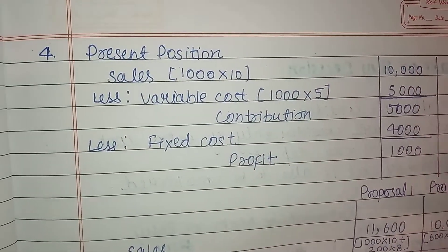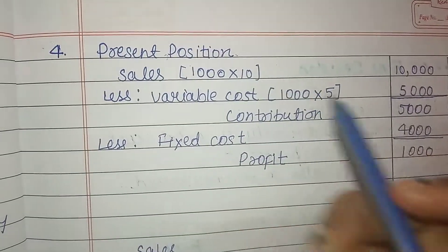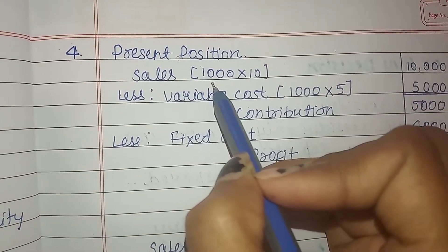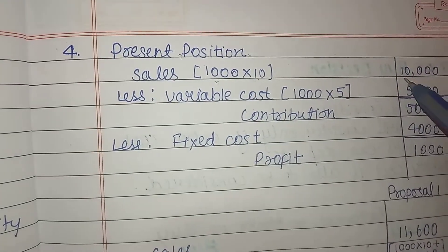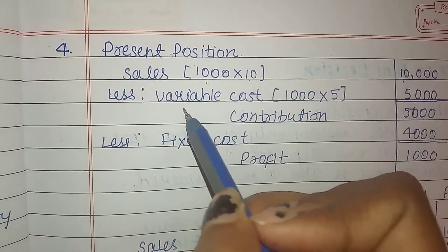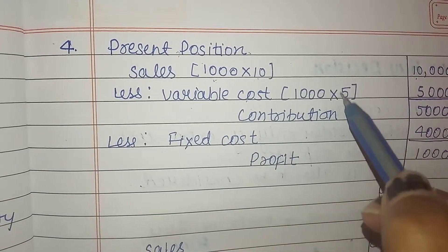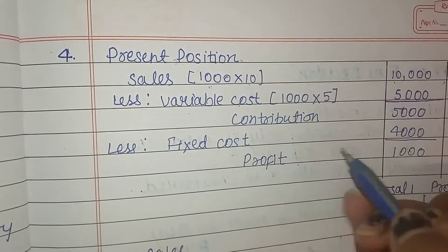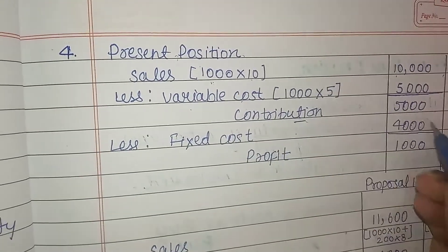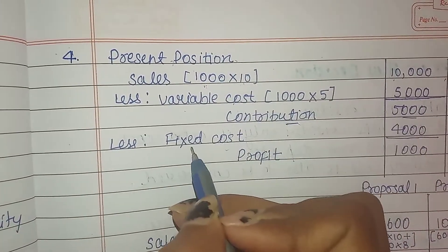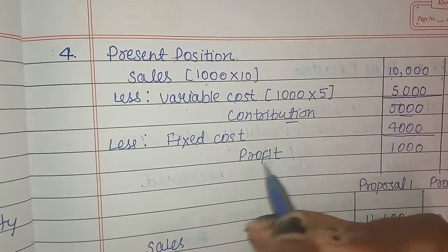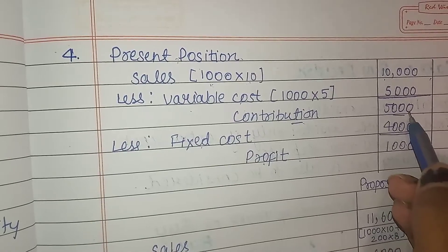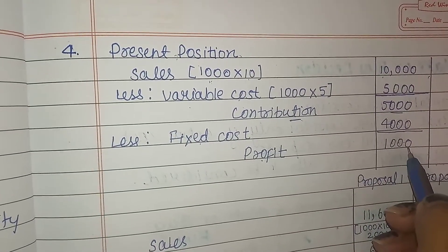First, we calculate the company's present position. Sales: 1000 units at ₹10 = ₹10,000. Less variable cost: 1000 units at ₹5 = ₹5,000. Contribution = ₹5,000. Less fixed cost ₹4,000. So profit = ₹1,000. Sales minus variable cost gives contribution, and contribution minus fixed cost gives profit.